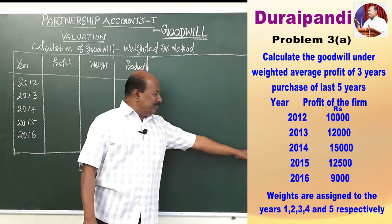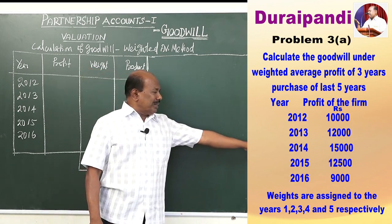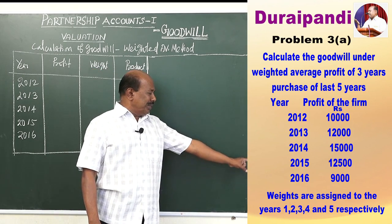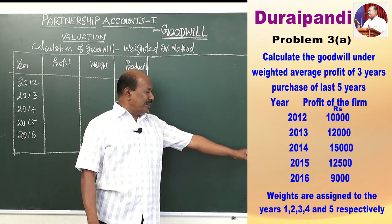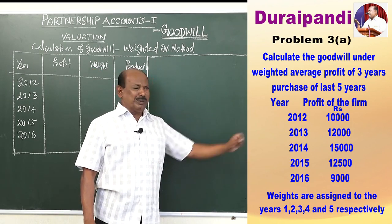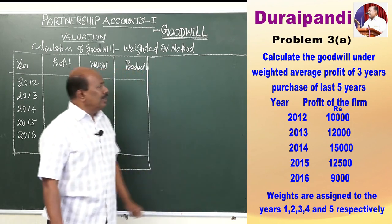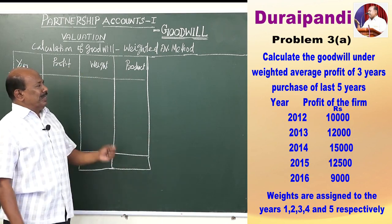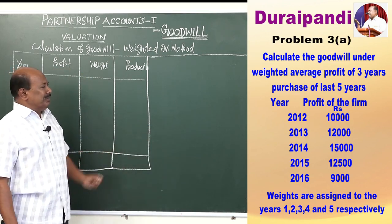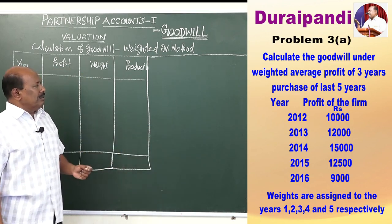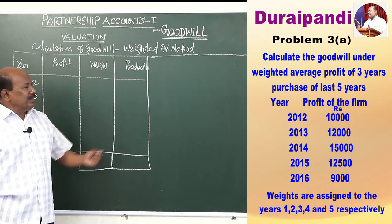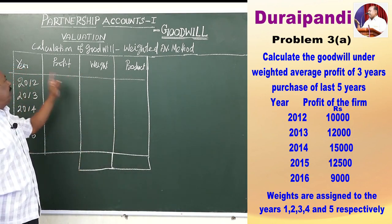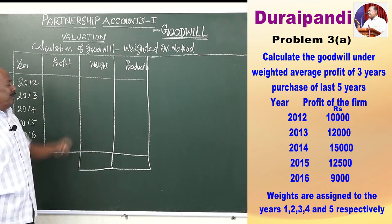Weights are assigned to the years 1, 2, 3, 4, and 5 respectively. Now we have to calculate the weighted average profit. For calculating the weighted average profit, we should follow this table.